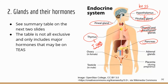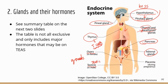The pancreas secretes hormones that regulate glucose levels. Next are the adrenal glands — there are two of them, sitting on top of each kidney. Finally, there are endocrine glands shared by the reproductive system: the gonads, such as the ovaries and testes, which secrete sex hormones.